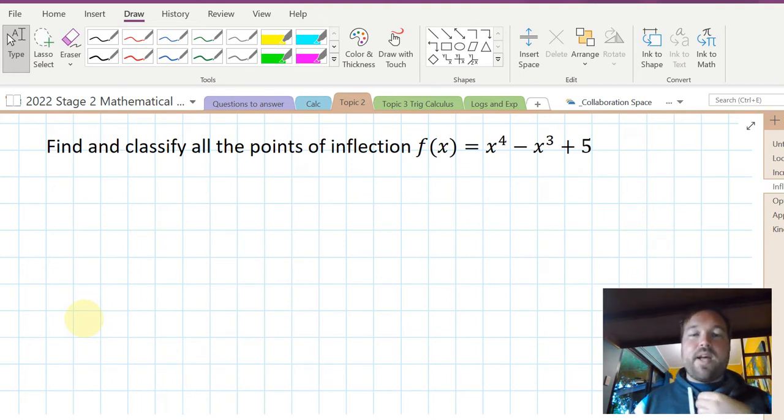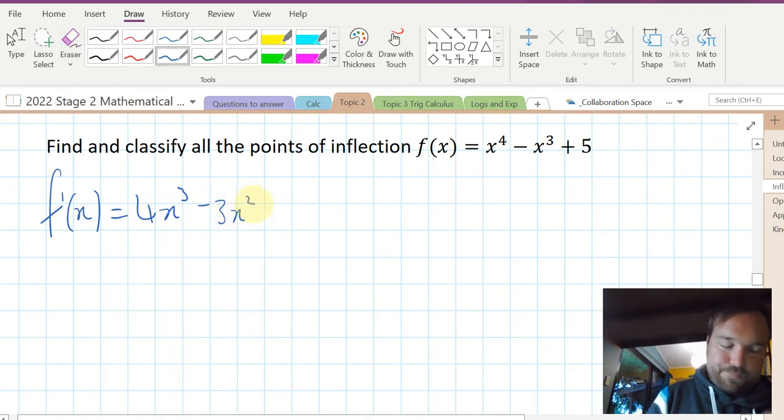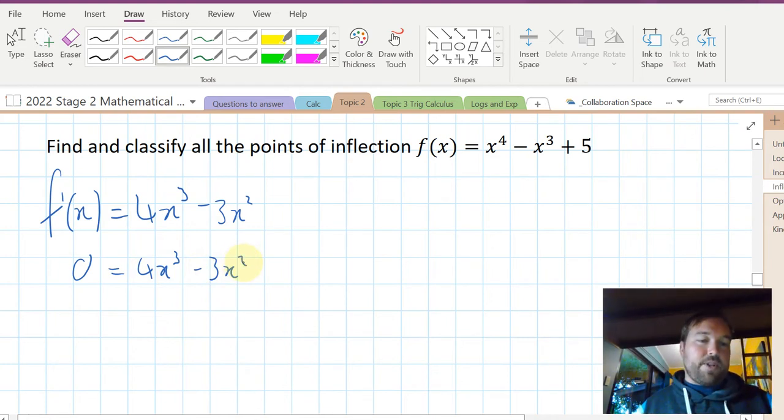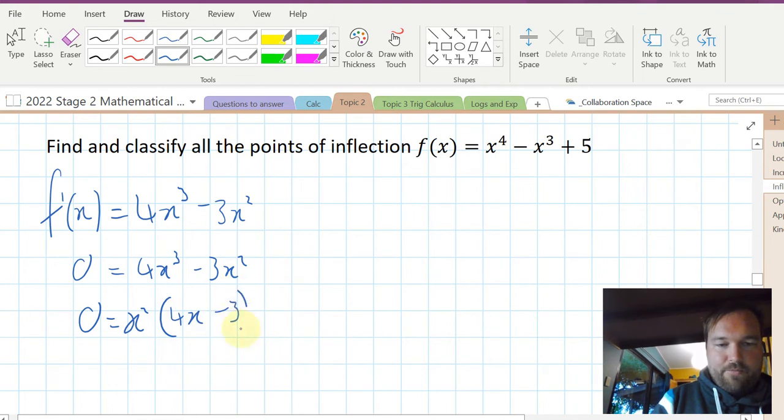To find and classify all the inflection points, we first of all find f'(x), which for our case is very easy. 4x^3 - 3x^2. We're going to set this equal to zero. And then we solve. Generally factorizing helps us out. x squared, what do we have? x squared times 4x minus 3. And therefore, our two solutions are x equals zero from this first one, and x equals three quarters.